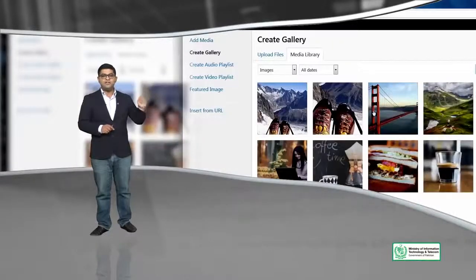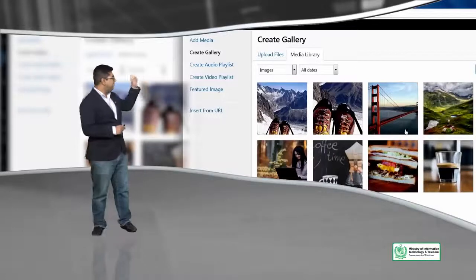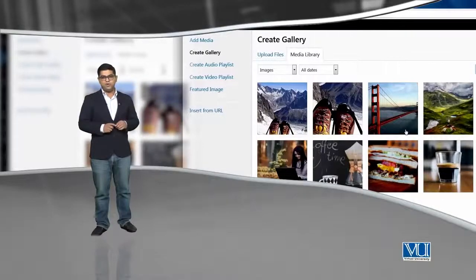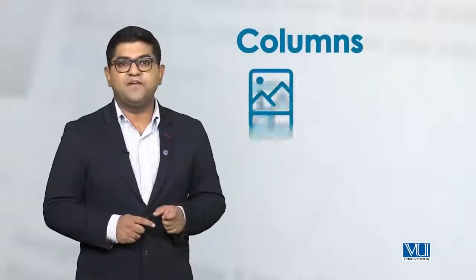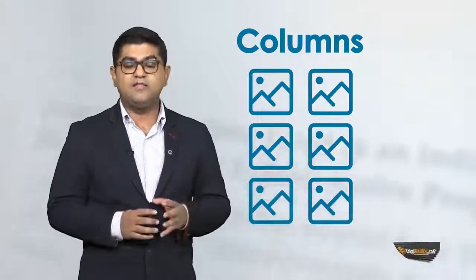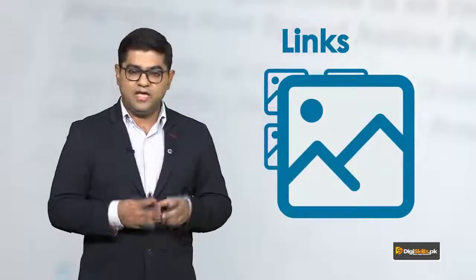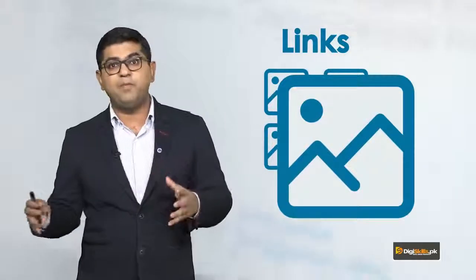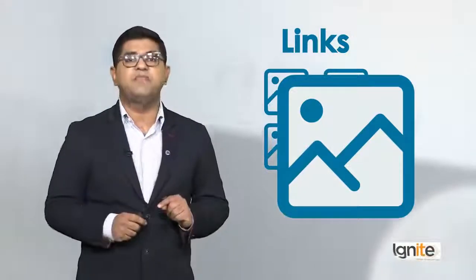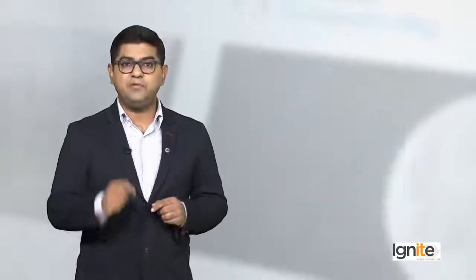You can click on the button on the left side which shows 'Create Gallery'. That is your option to create a very simple and amazing gallery with WordPress. Here you can specify the columns — you can see the gallery in different columns. Here you can also specify the link.